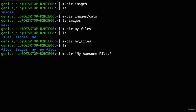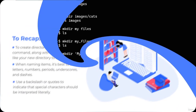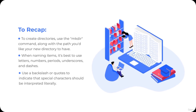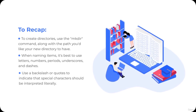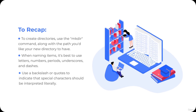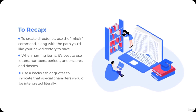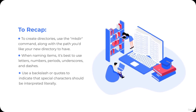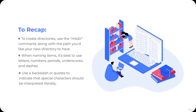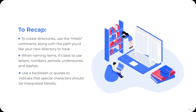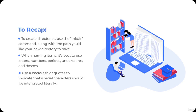Congratulations! You are now proficient in creating and naming directories. Here's a recap: to create directories, use the 'mkdir' command along with the path you'd like your new directory to have — you can use either an absolute or relative path. When naming items, it's best to use letters, numbers, periods, underscores, and dashes. Escaping is a technique that employs either a backslash or quotes to indicate that spaces or other special characters should be interpreted literally.